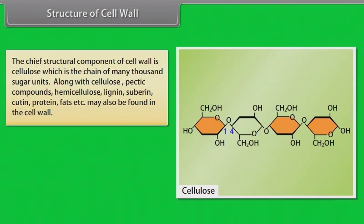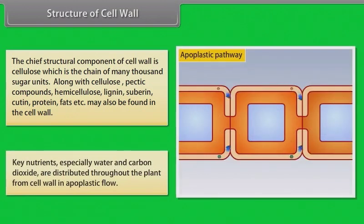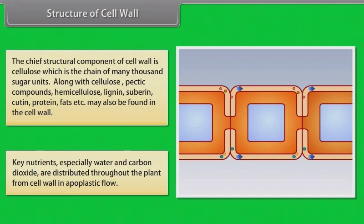Along with cellulose, pectic compounds, hemicellulose, lignin, suberin, cutin, protein, and fats may also be found in the cell wall. Key nutrients, especially water and carbon dioxide, are distributed throughout the plant from the cell wall in apoplastic flow.